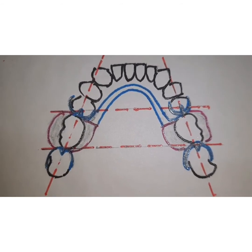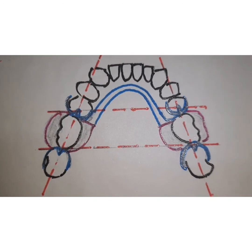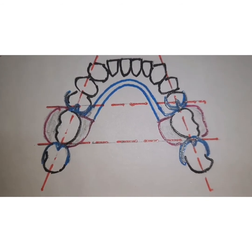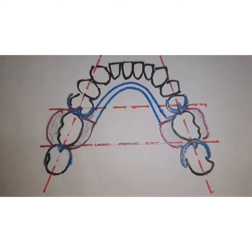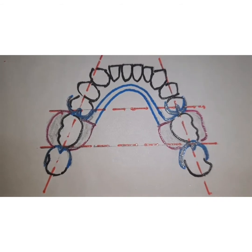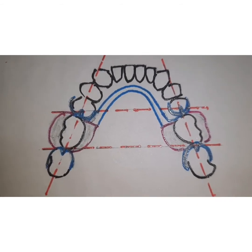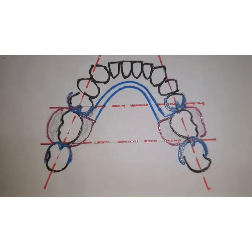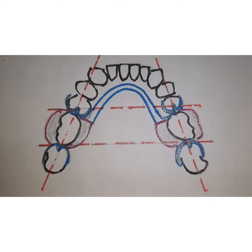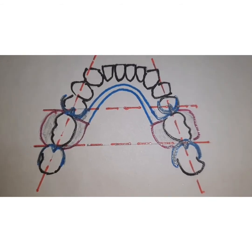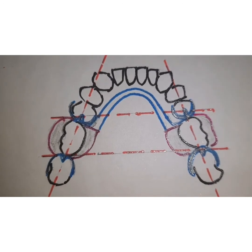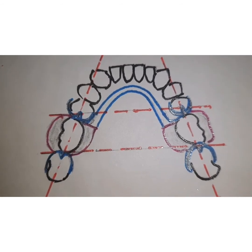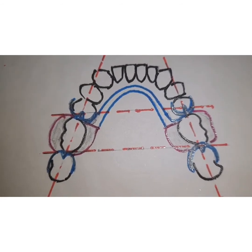The denture base should be designed so that it does not interfere with any movement of the surrounding tissues. It should be closely adapted and accurately fitting, and highly polished so that it does not invite plaque accumulation. This will all help in better neuromuscular control for the patient. An anatomic impression is sufficient in a class 3 situation; a functional impression is not usually required.